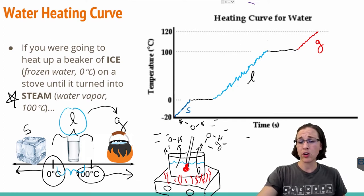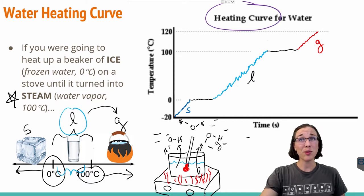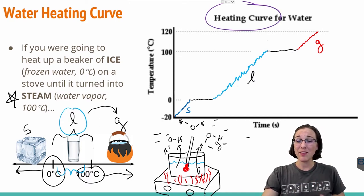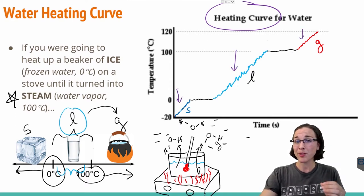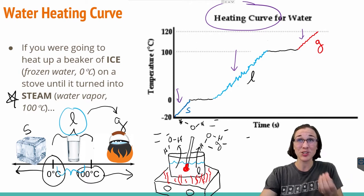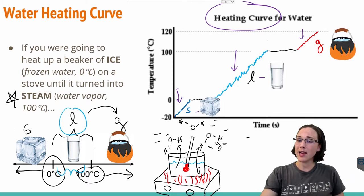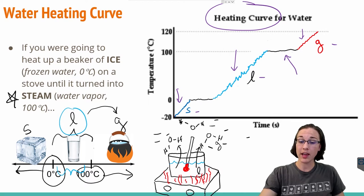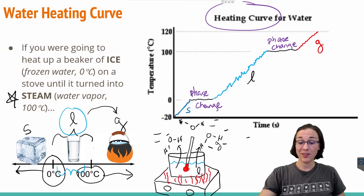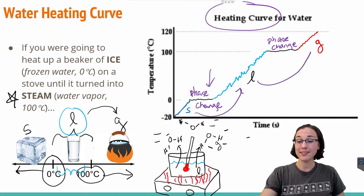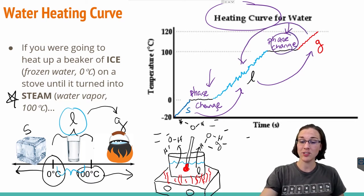So what does this mean for any heating curve for any chemical? If you ended up seeing a diagonal or a slant upwards, we know that the chemical is in a certain state — solid, liquid, or gas. And anytime you would see a horizontal line, that's where a phase change is occurring: going from solid to liquid, from liquid to gas, or vice versa — gas to liquid, liquid to solid. You have to go through the phase change.